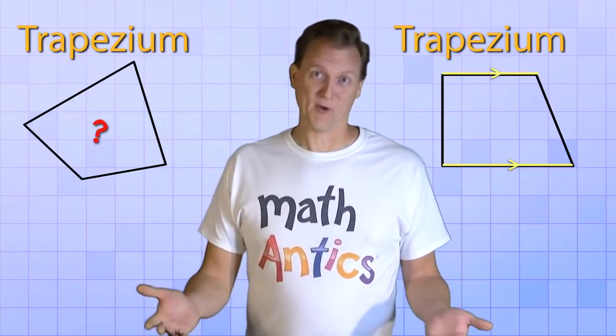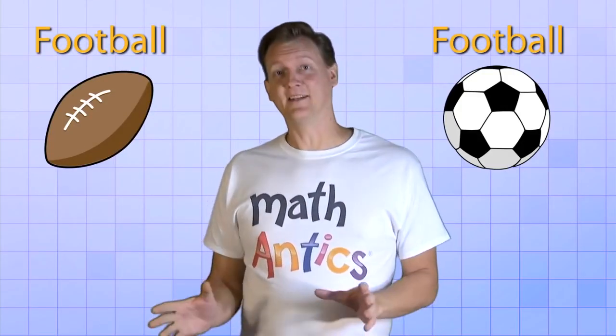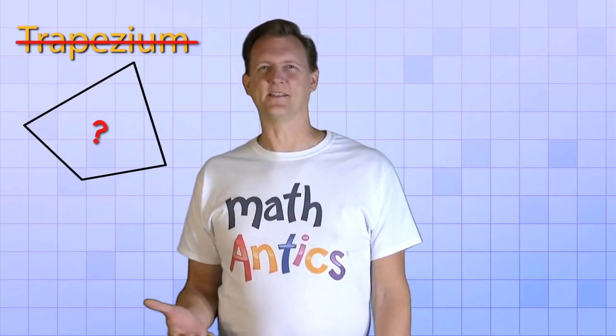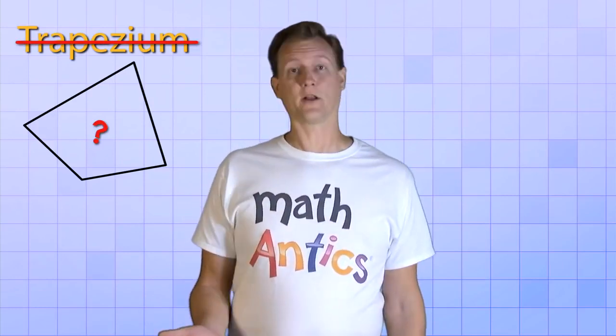Well, at least they both like football. But to keep things clear at Math Antics, we're not going to call a quadrilateral that has no parallel sides a trapezium. We don't think it needs a special name, so we're just going to call it a quadrilateral.